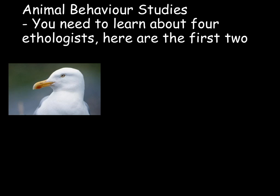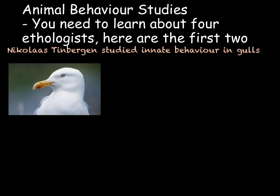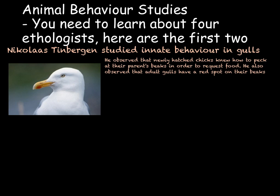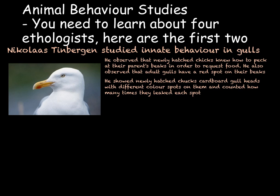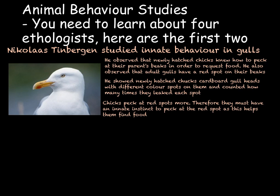Tinbergen noticed that newly hatched gull chicks knew how to peck at their parent's beak to request food, and that adult gulls have a signature red spot on the bottom of their beak. He wanted to find out if this red spot influenced the chicks' pecking behaviour. He showed newly hatched chicks cardboard gull heads with different colour spots on the beaks and counted the number of times they pecked at each. He found that chicks pecked at beaks with red spots much more often, leading him to conclude that the chicks are born with an instinct to peck at the red spot — this pecking is an innate behaviour.